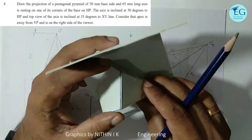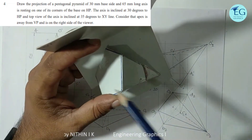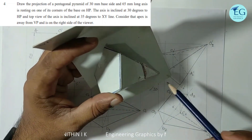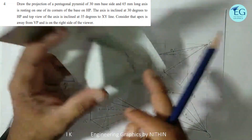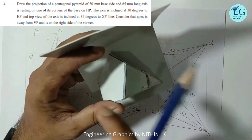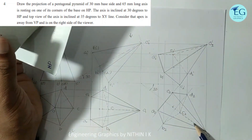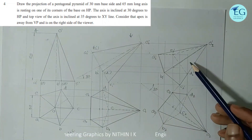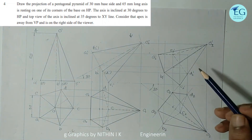Now we will select the correct answer. We will orient the line at 35 degrees. This is the final projection.